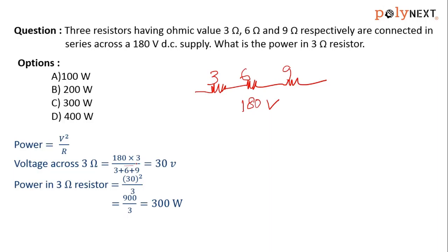The potential division rule says total voltage applied across the combination, which is 180 volts, times the resistance we need the power for, 3 ohms, divided by the sum of series resistances: 3, 6, and 9.